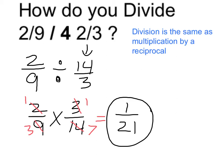Or, in other words, two-ninths divided by four and two-thirds is equal to one over twenty-one. A pretty small fraction, as we expected to find. Thank you.